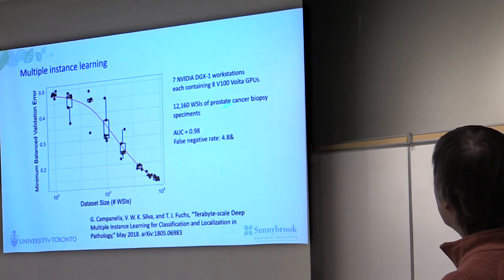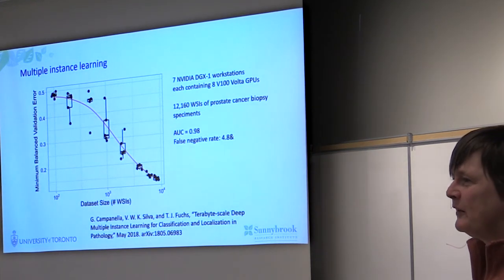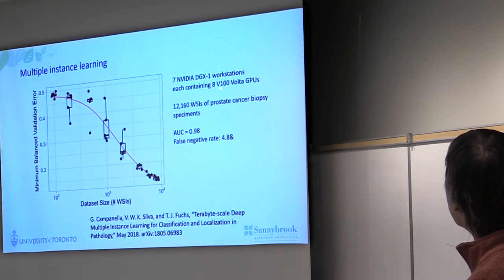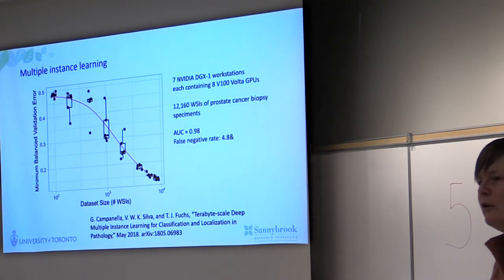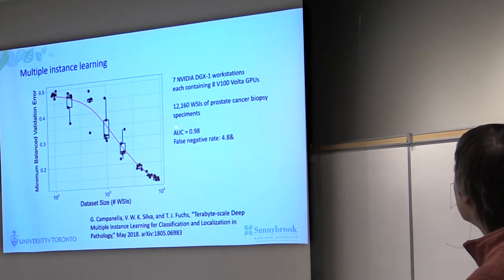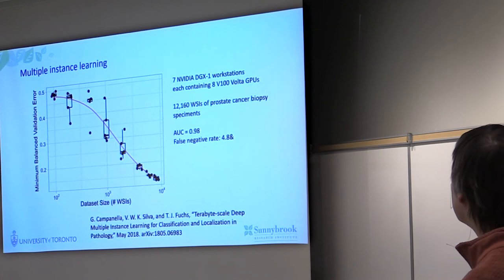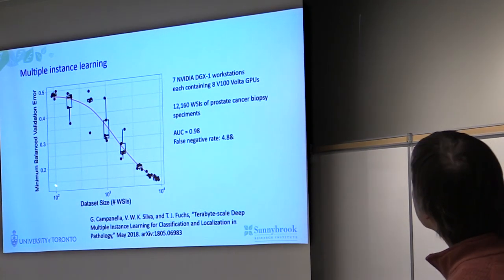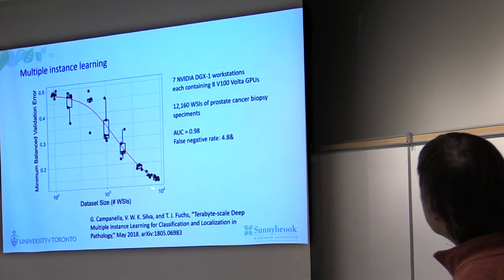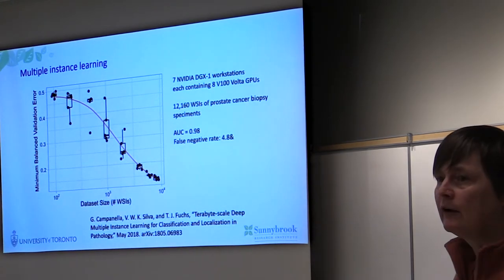Part of the problem is what Google had to play with versus what we have. They had DGX-1s with 8 V100 cards — 8 times 32 gigabytes of RAM — and Memorial Sloan Kettering's entire back catalogue. Their prostate cancer dataset alone has 12,000 whole slide images. They basically show that with this kind of multiple instance learning technique, you really need a truckload of data. We simply don't have that kind of luxury.